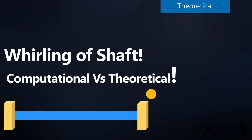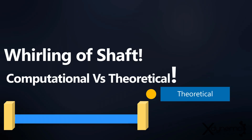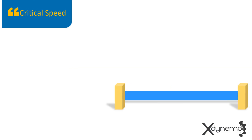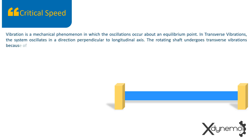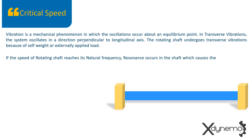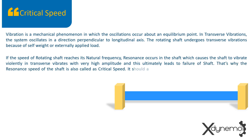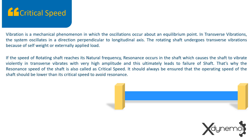First we will go through theoretical calculations. Vibration is a mechanical phenomenon in which the oscillations occur about an equilibrium point. In transverse vibrations, the system oscillates in a direction perpendicular to longitudinal axis. The rotating shaft undergoes transverse vibrations because of self-weight or externally applied load. If the speed of the rotating shaft reaches its natural frequency, resonance occurs, which causes the shaft to vibrate violently in the transverse direction with very high amplitude, ultimately leading to failure. That's why the resonance speed is also called critical speed. It should always be ensured that the operating speed of the shaft is lower than its critical speed to avoid resonance.